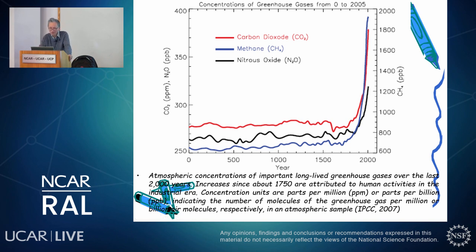Looking at changes in greenhouse gases — CO2, methane, and nitrous oxide — over the last 200 years since the beginning of the industrial revolution, we see a clear rising trend. CO2 is measured in parts per million, methane and nitrous oxide in parts per billion, but all three key greenhouse gases are rising concurrently.